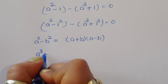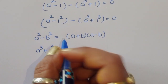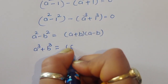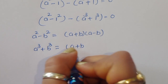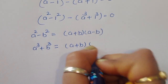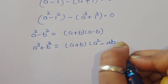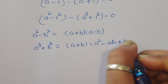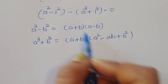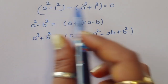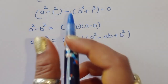The formula for a squared minus b squared is equal to (a + b)(a − b). Now for a cubed plus b cubed, the formula is a cubed plus b cubed is equal to (a + b)(a squared minus ab plus b squared). We will now use both these formulas.